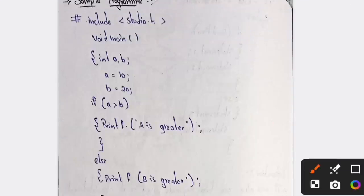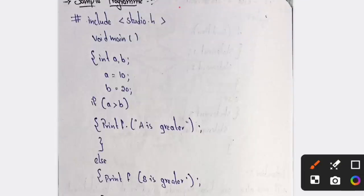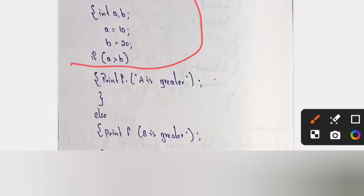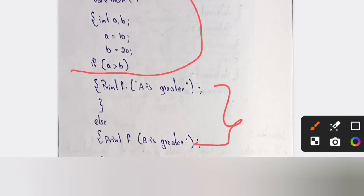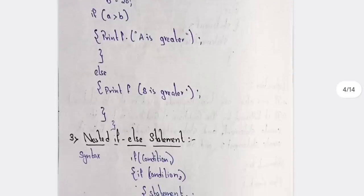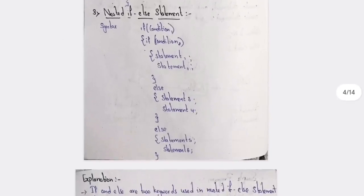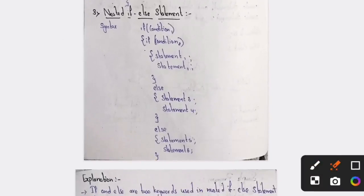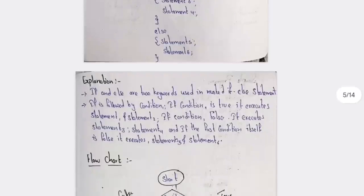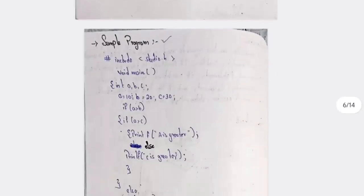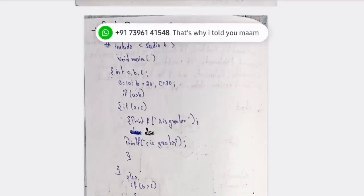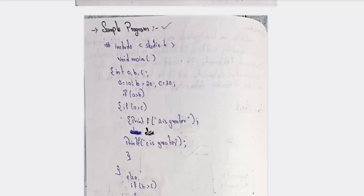Till here it is the same — printf and if-else is what occurred. Next you are having if-else-if. In if-else-if the statement goes: if A statement, else if A statement, else if A statement — you need to write it double time, you need to remember it. Next to that you are having a sample program, which is also important.